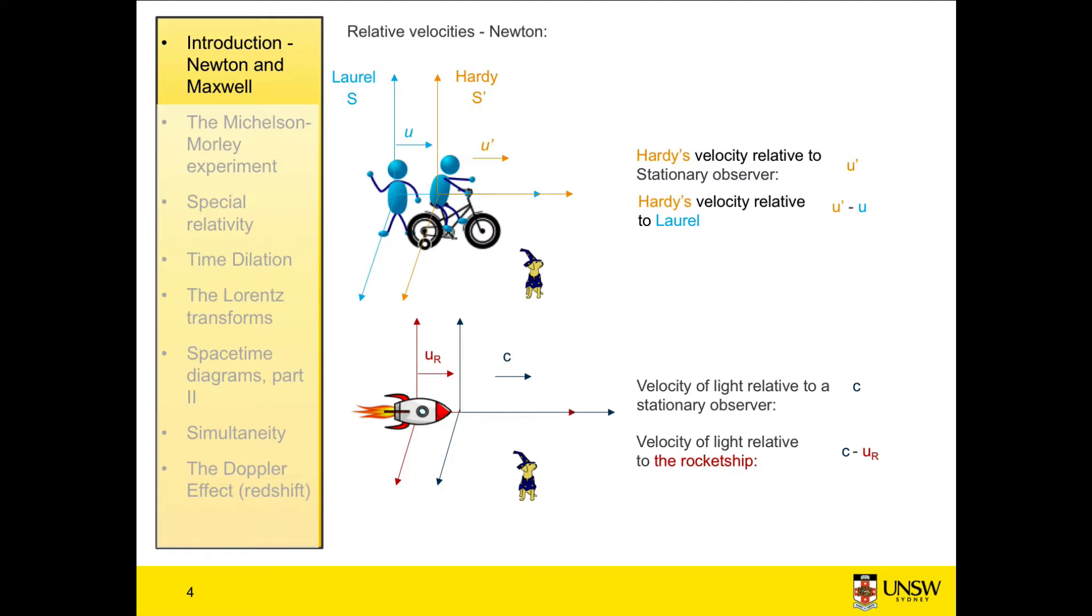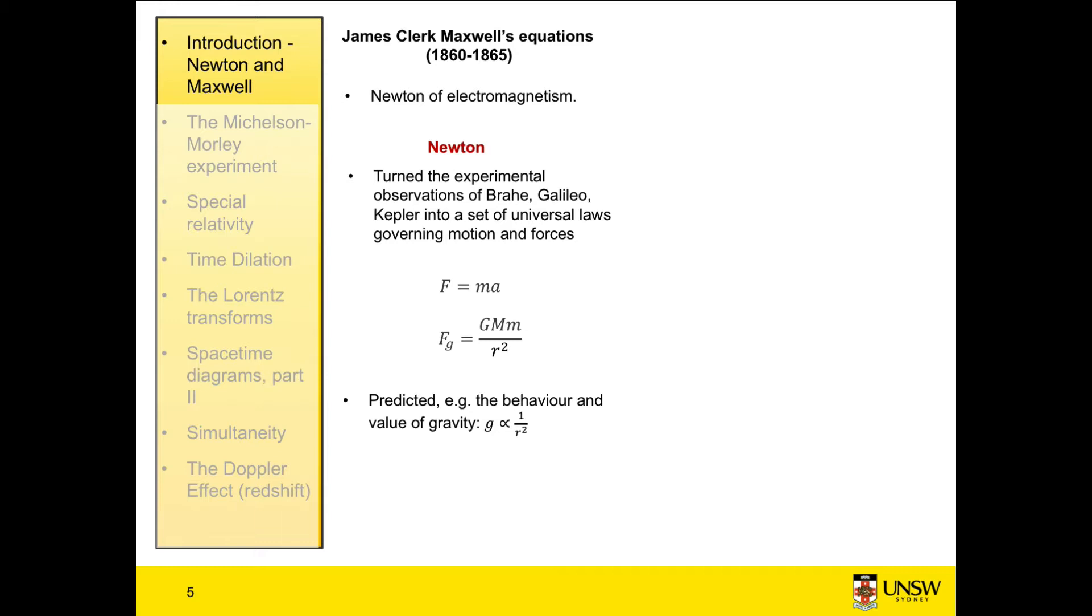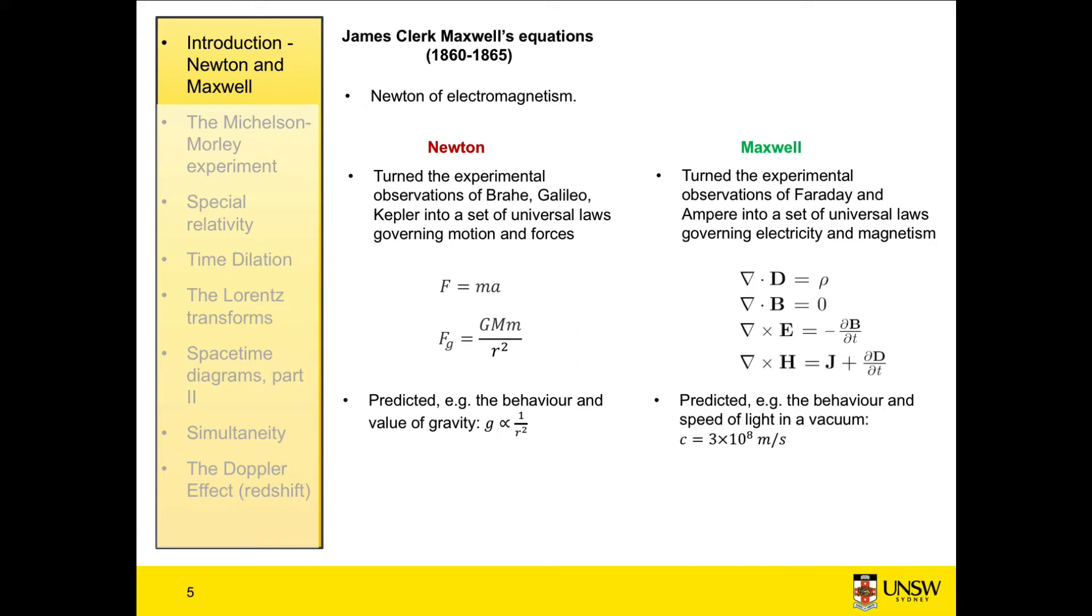And all was well and good for a good 200 years, right up until the arrival of James Clerk Maxwell. James Maxwell was the equivalent of Newton in the field of electromagnetism. Newton's genius was that he took the experimental observations of excellent experimental physicists, of Brahe, of Galileo, and of Kepler, and he turned them into a set of universal physical laws that governed motion, for example, the laws F equals mA and our gravitational force. And with these laws, he predicted, for example, the behavior of gravity. As a parallel, Maxwell took the excellent experimental observations of Faraday and of Ampere, and he turned those into a set of universal laws which governed electricity and magnetism. So those are the laws that govern the behavior of light. And these were his equations. And with these equations, he predicted the speed of light in a vacuum. The problem is that Maxwell predicted that the speed of light in a vacuum is a universal constant. And we'll look more at what that means in the next slide.